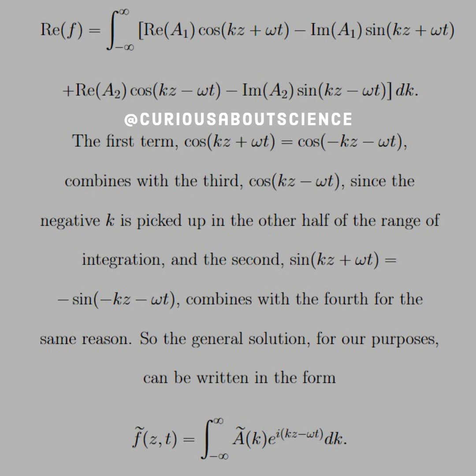Specifically, Re(f) = integral of [Re(A₁)cos(kz+ωt) - Im(A₁)sin(kz+ωt) + Re(A₂)cos(kz-ωt) - Im(A₂)sin(kz-ωt)]dk. The first term, cos(kz+ωt) = cos(-kz-ωt), combines with the third, cos(kz-ωt), since the negative k is picked up in the other half of the range of integration.